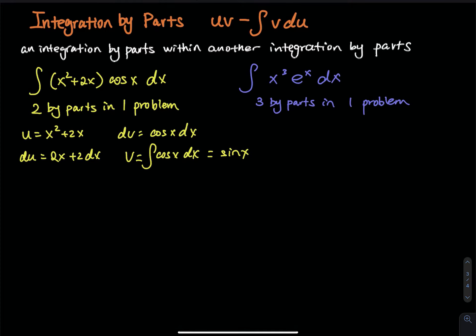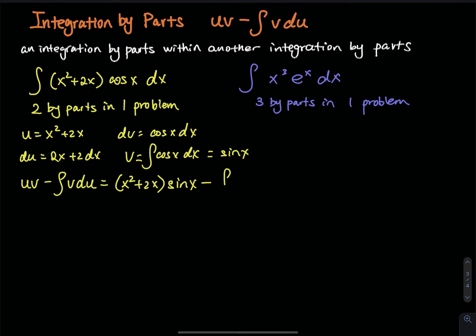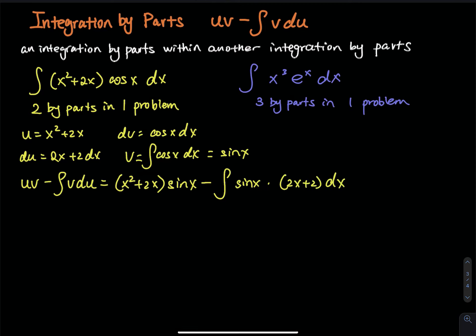And then we do uv minus the integral of v du. So uv gives us x squared plus 2x times sine of x, and then minus the integral of v du. So the integral of sine x times the du, which is 2x plus 2 dx.